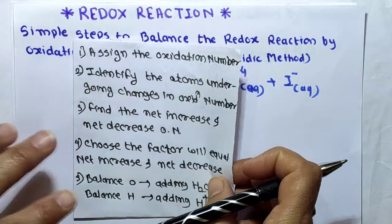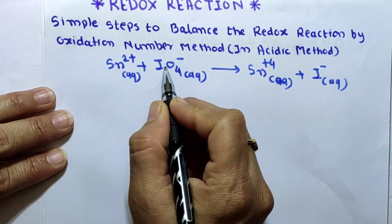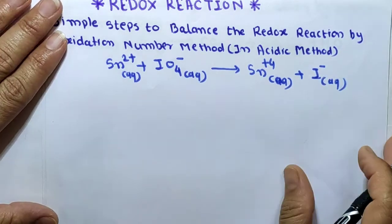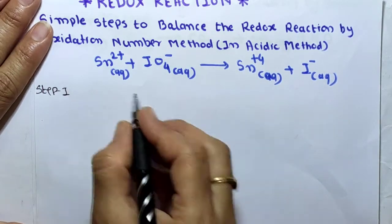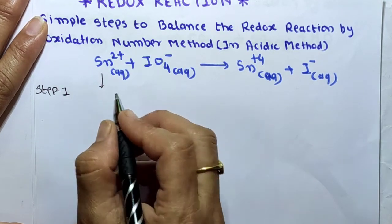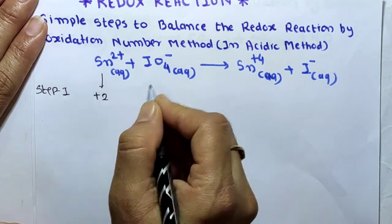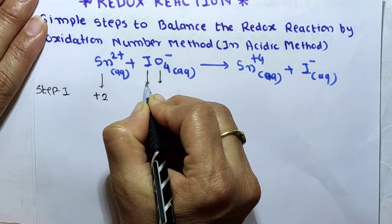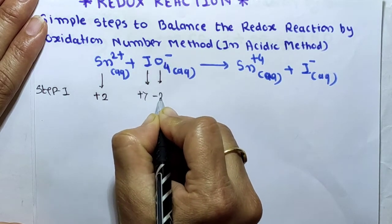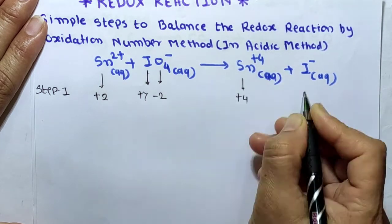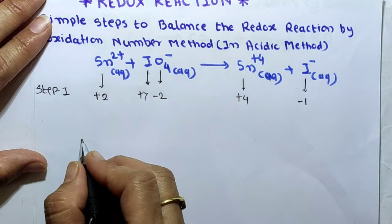The redox reaction is Sn²⁺ + IO₄⁻ → Sn⁴⁺ + I⁻. In step one, we assign oxidation numbers. I already uploaded a video on how to find oxidation numbers — please refer to that. Sn carries +2 charge, so oxidation number is +2. For IO₄⁻, oxygen is −2, so 4×(−2) = −8; therefore iodine is +7. On the product side, Sn carries +4 and iodine carries −1.